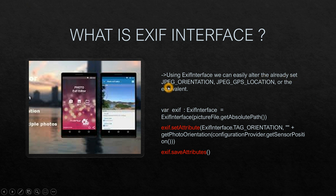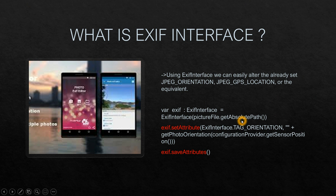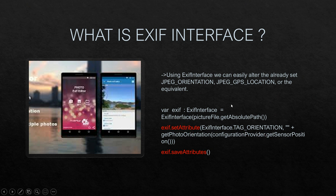Here is an example of using ExifInterface to alter an already-set JPEG orientation and GPS location. A new ExifInterface is created and the path of the image is retrieved using pictureFile.getAbsolutePath(). Then the setAttribute method is called to get the sensor position and set the orientation of the image accordingly. The saveAttributes function then saves that particular orientation.